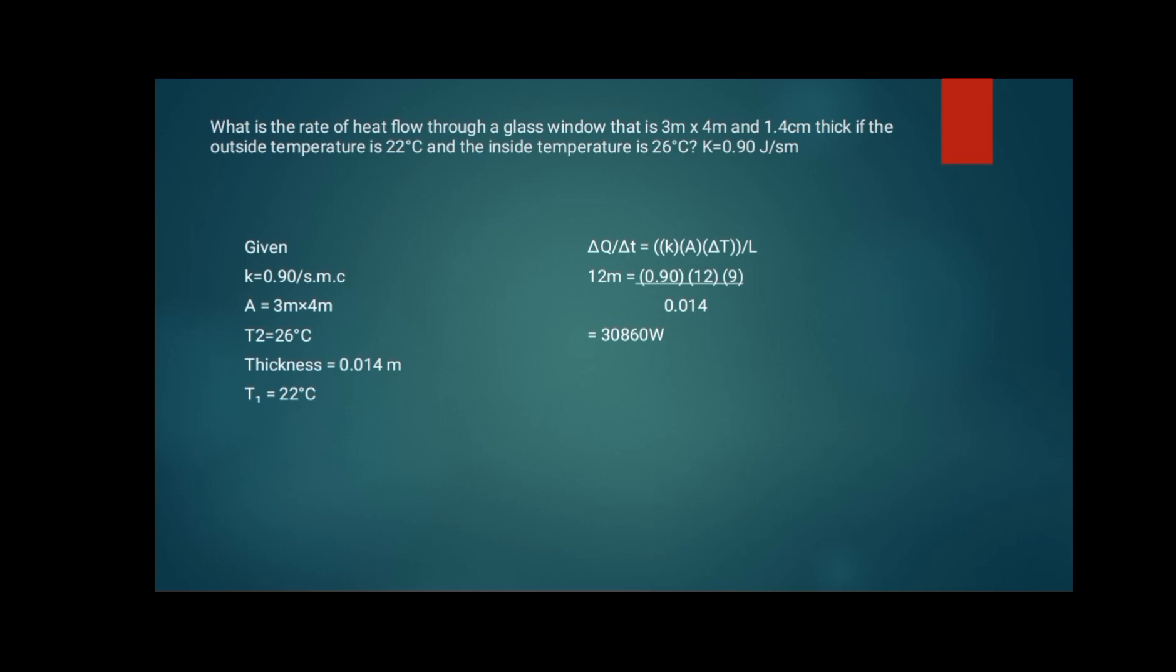So we have K equals to 0.90 joules per second meter, then area is equals to 3 meters by 4 meters, T2 is equals to 26°C, and the thickness is equals to...